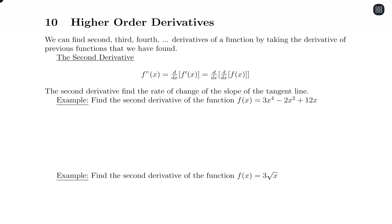So really, the second derivative is just taking the derivative of the first derivative — we take the derivative of our original function and then take the derivative again. The second derivative finds the rate of change for the slope of the tangent line, which is like a rate of change of the rate of change. It's like if we graph our f prime of x function, the second derivative is evaluating the slopes of the tangent lines of that function.